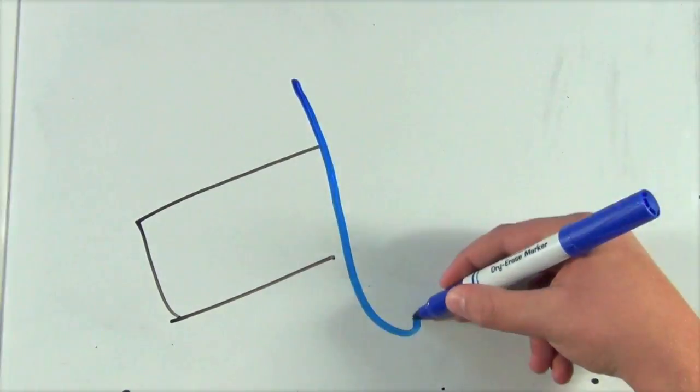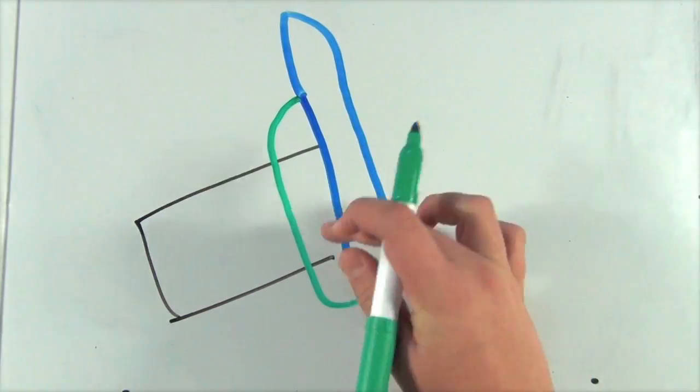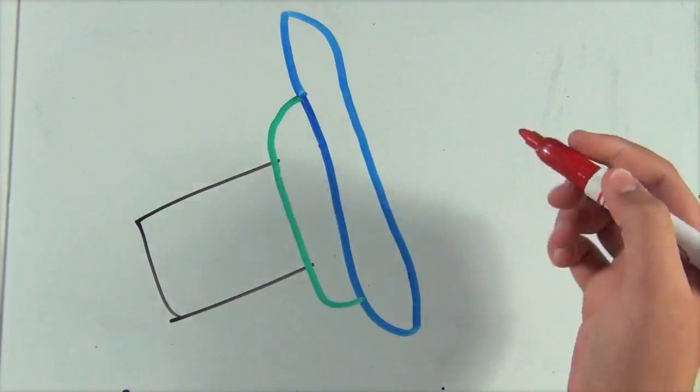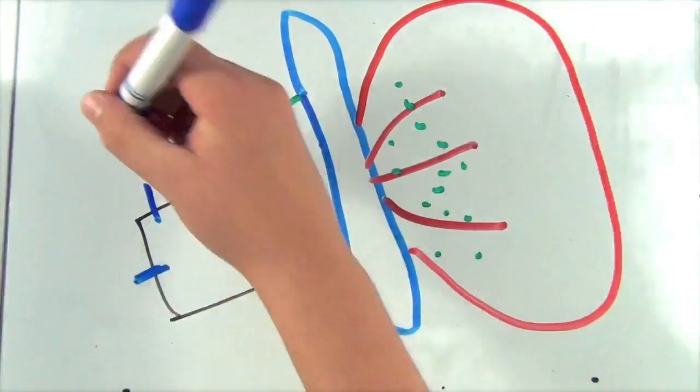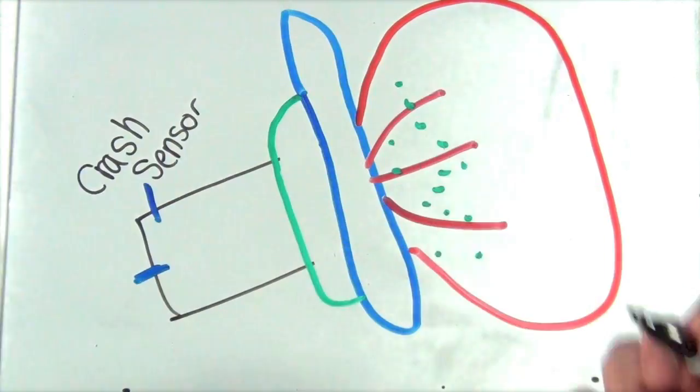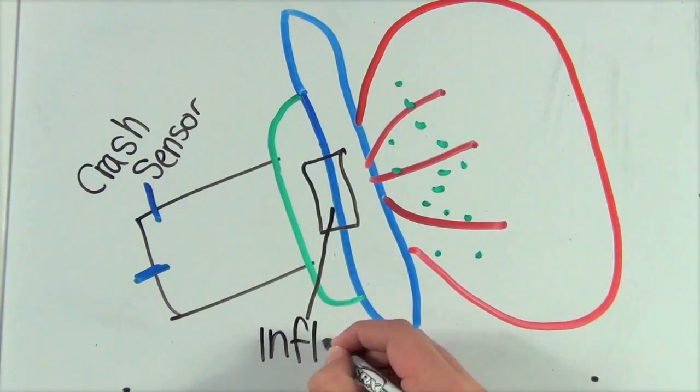Now let's take a deeper look in the steering wheel. And as you can see, the steering wheel consists of one airbag filled with nitrogen, two crash sensors, and one inflator.